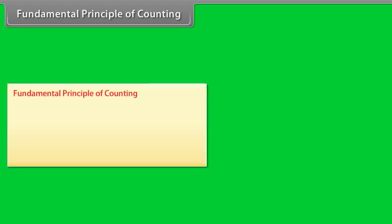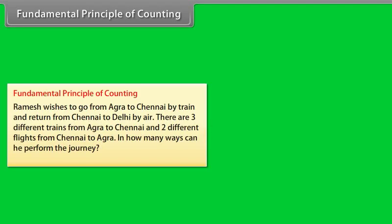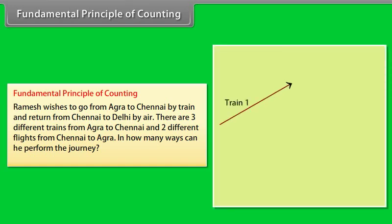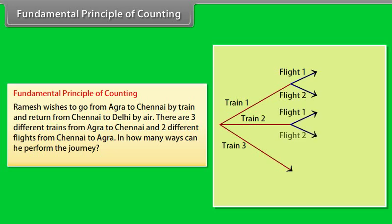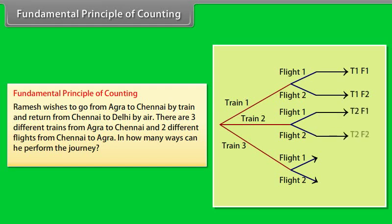Fundamental principle of counting. First, let's understand it with an example. Ramesh wishes to go from Agra to Chennai by train and return from Chennai to Delhi by air. There are three different trains from Agra to Chennai and two different flights from Chennai to Agra. In how many ways can he perform the journey? Since he can choose any one of the three trains for going to Chennai, and for each such choice he has two choices for returning to Agra.